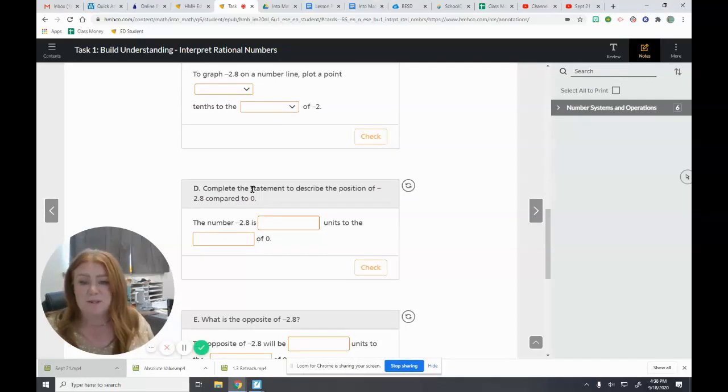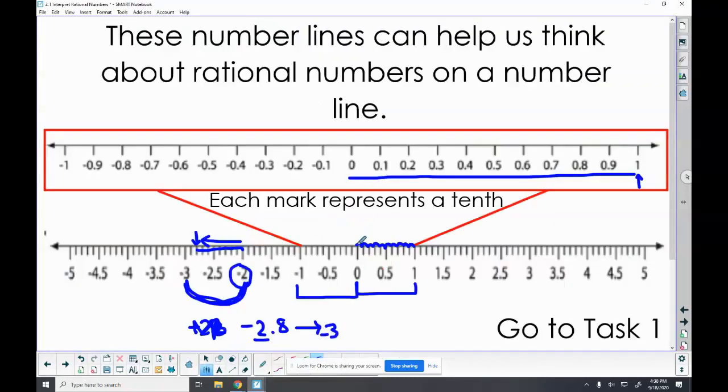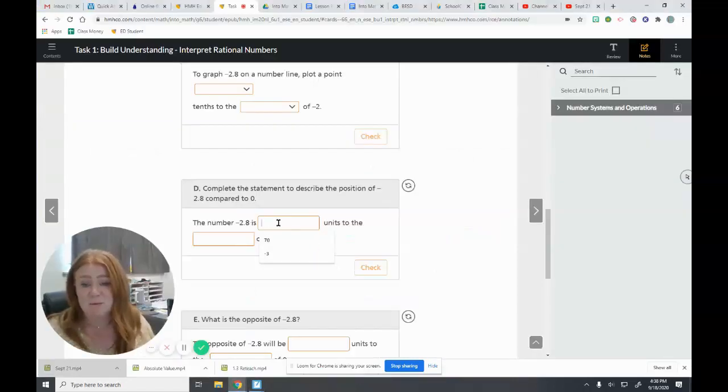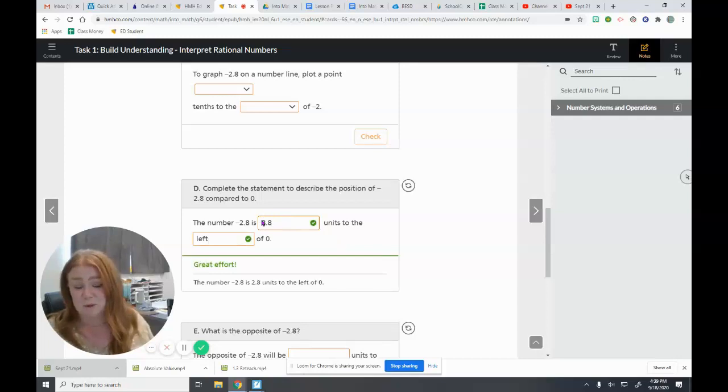Next we're going to complete the statement to describe the position of negative 2.8 compared to zero. Let's come back and look at our zero here. I know negative 2.8 is still to the left because it's negative, and I have to go 2.8. So two full units and eight tenths more. Let's take a look at what our task says. The number negative 2.8 is 2.8 units to the left of zero. So 2.8, a distance of 2.8 to the left.